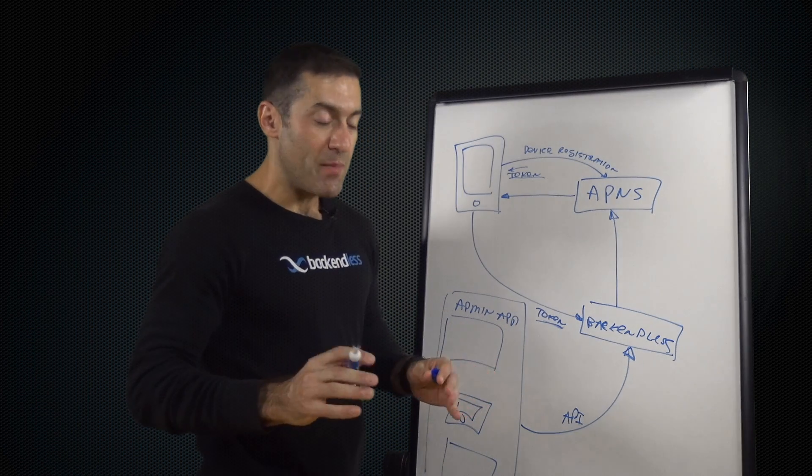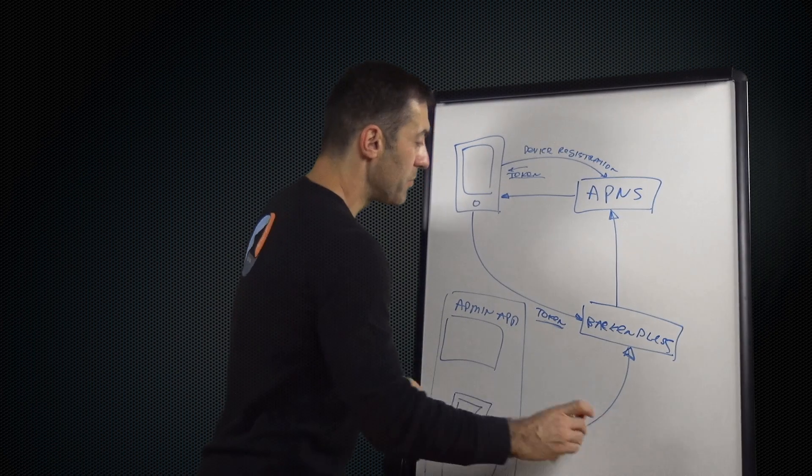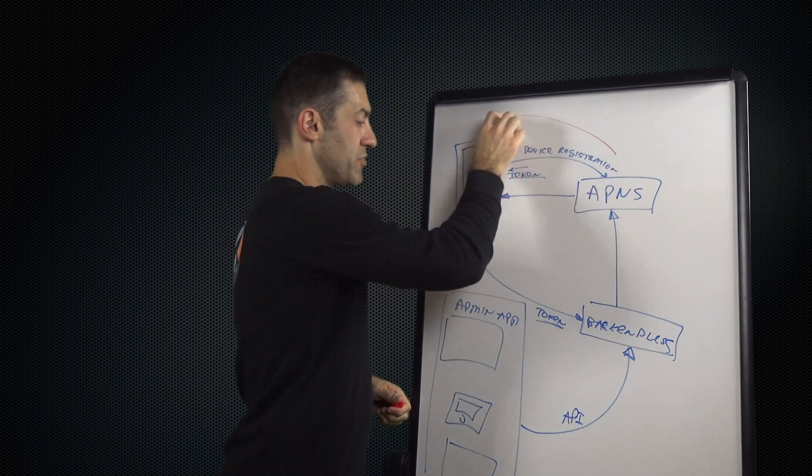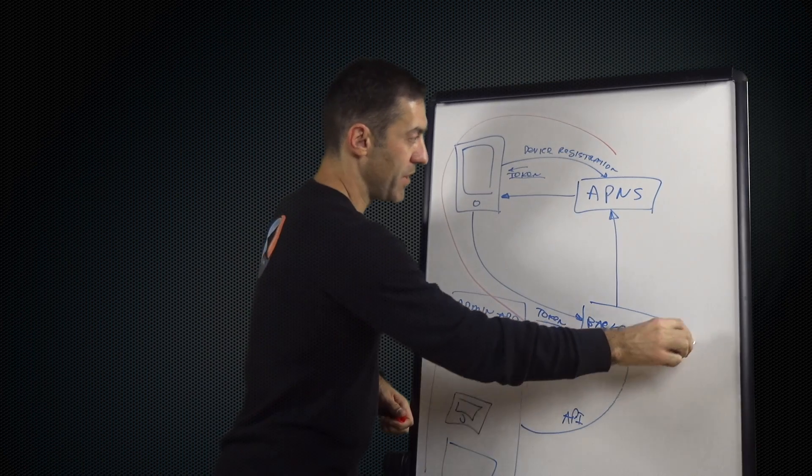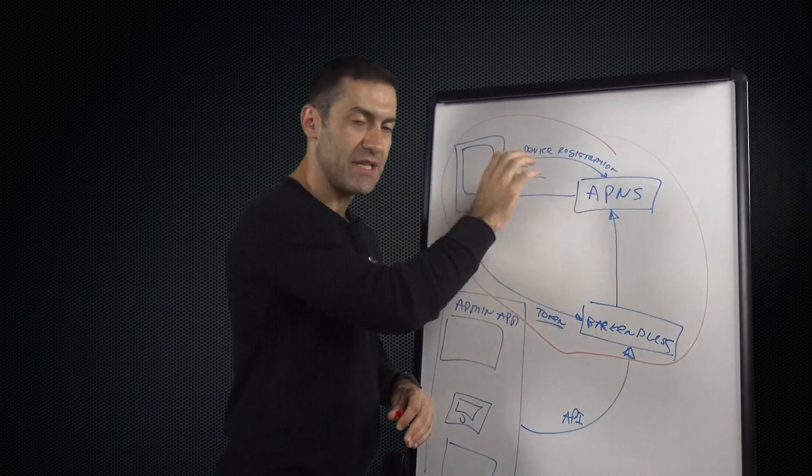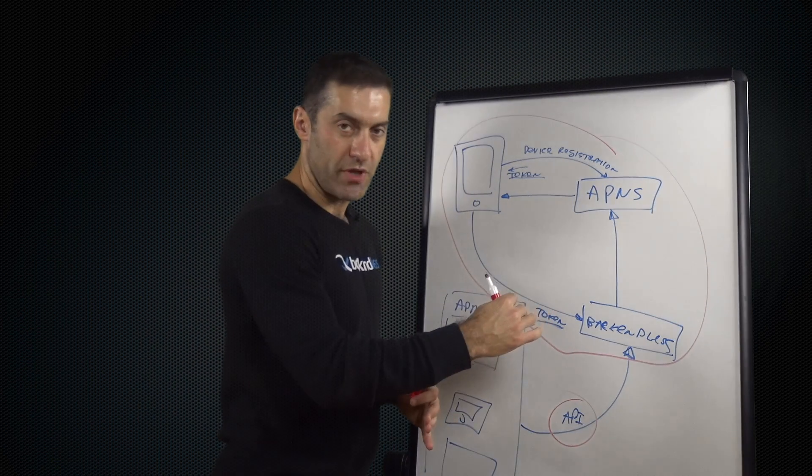Okay, so from the API perspective, as far as what Backendless provides, we provide the API to handle this part. So whenever user registration and the device registration with Backendless happen, all of this is done with really just a single line of code that triggers the entire sequence. And then we provide the API to publish push notifications.